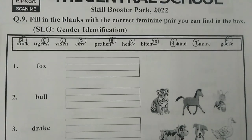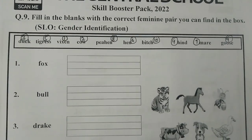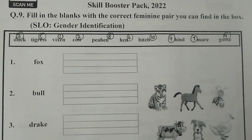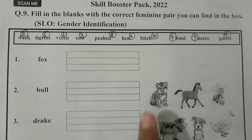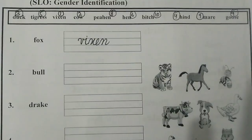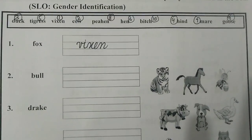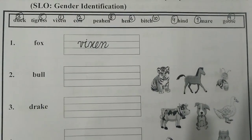First is fox. The feminine pair will be vixen. Write it in the given space. Next is bull. The feminine pair will be cow.